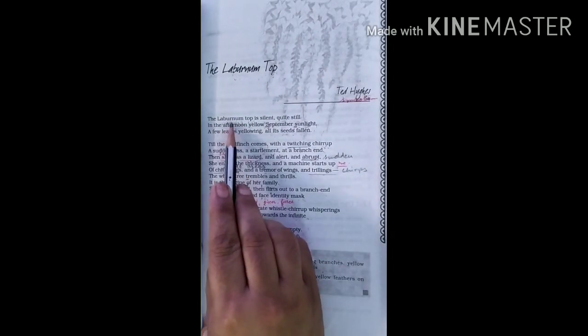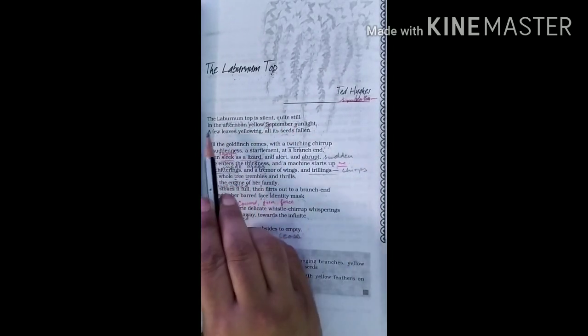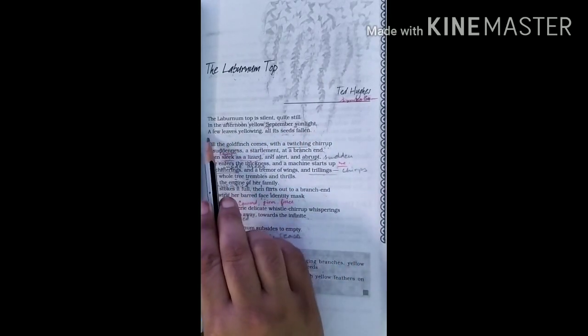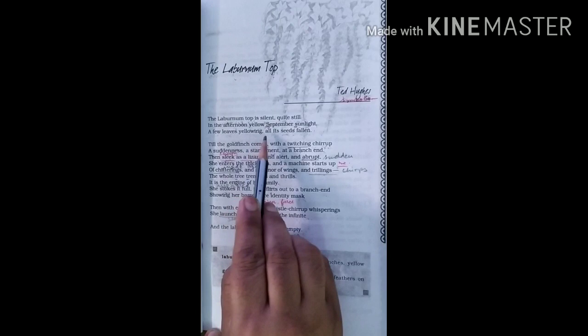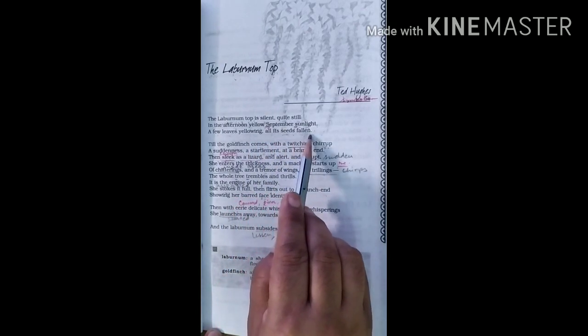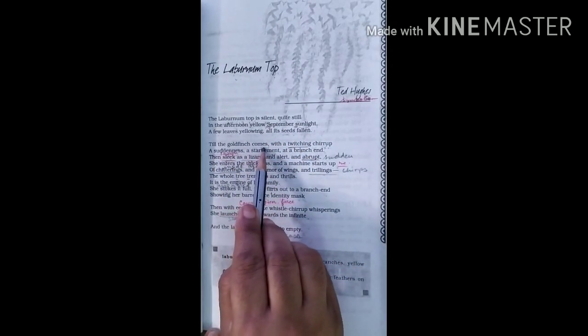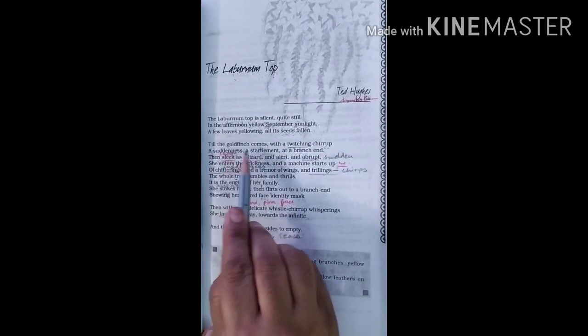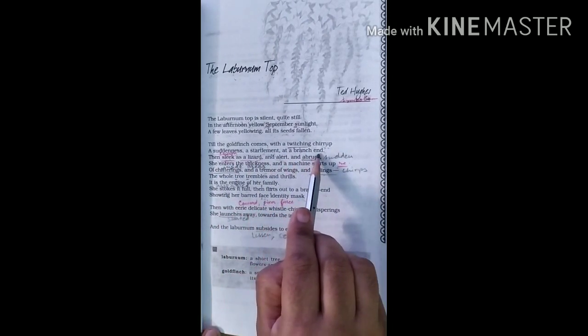The Laburnum top is silent, quite still in the afternoon yellow September sunlight, a few leaves yellowing, all its seeds fallen. Till the goldfinch comes with a twitching chirrup, a suddenness, a startlement, at a branch end.